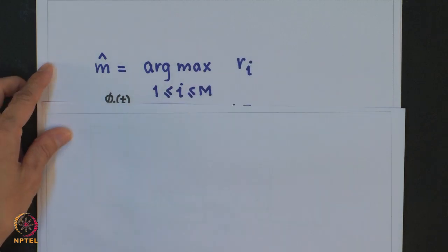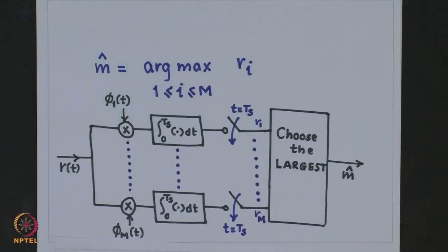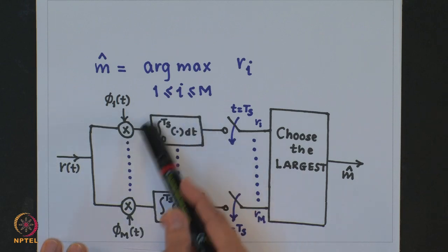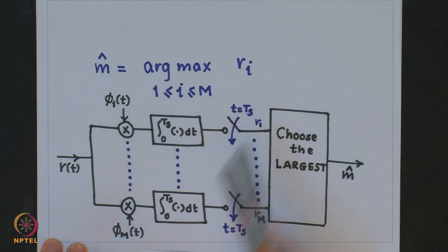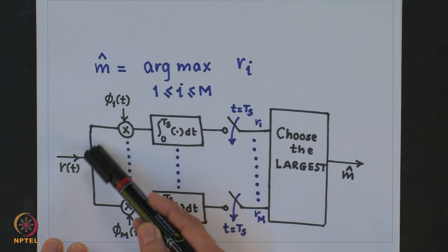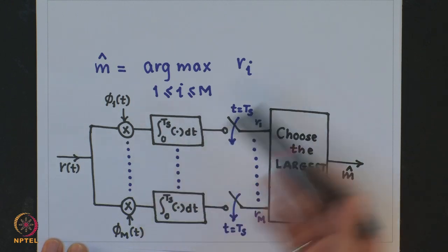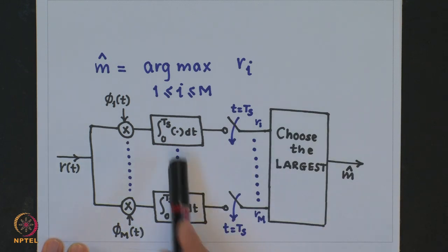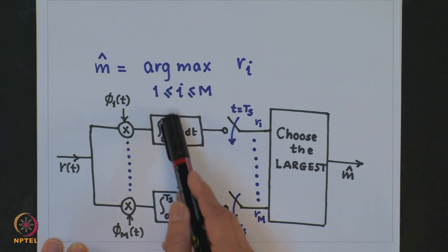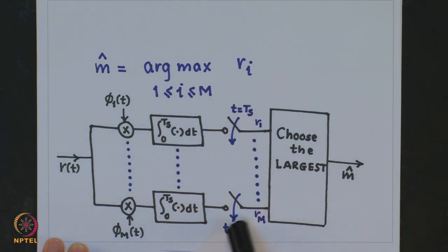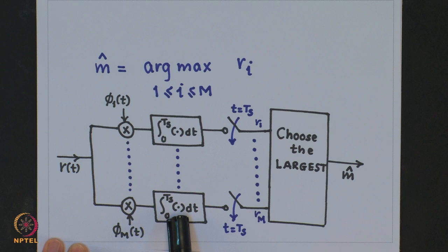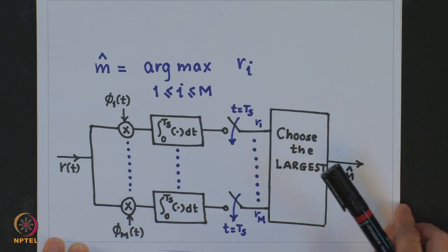Based on this decision rule, the optimum receiver or demodulator correlates R(t) with each basis signal, samples at time T_s, and chooses the largest output. This receiver is shown for the first symbol interval and can be extended to any interval — the sampling instances become t = kT_s, with integration limits from (k-1)T_s to kT_s, and we choose the largest to get the decision.